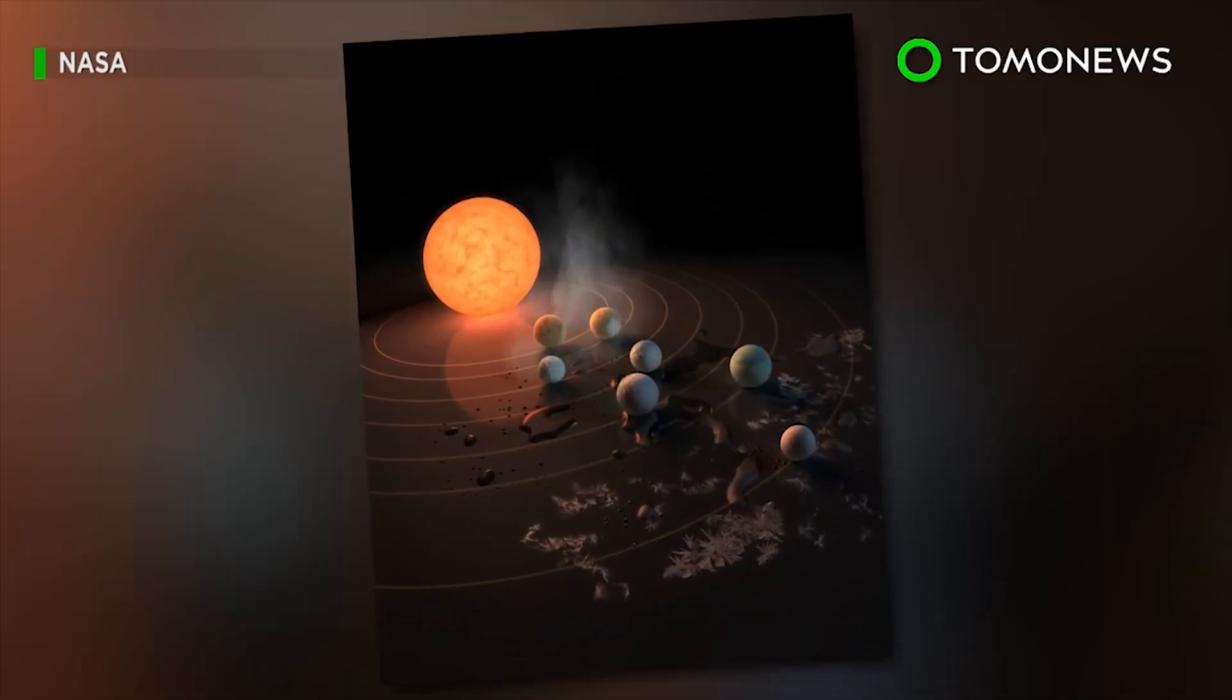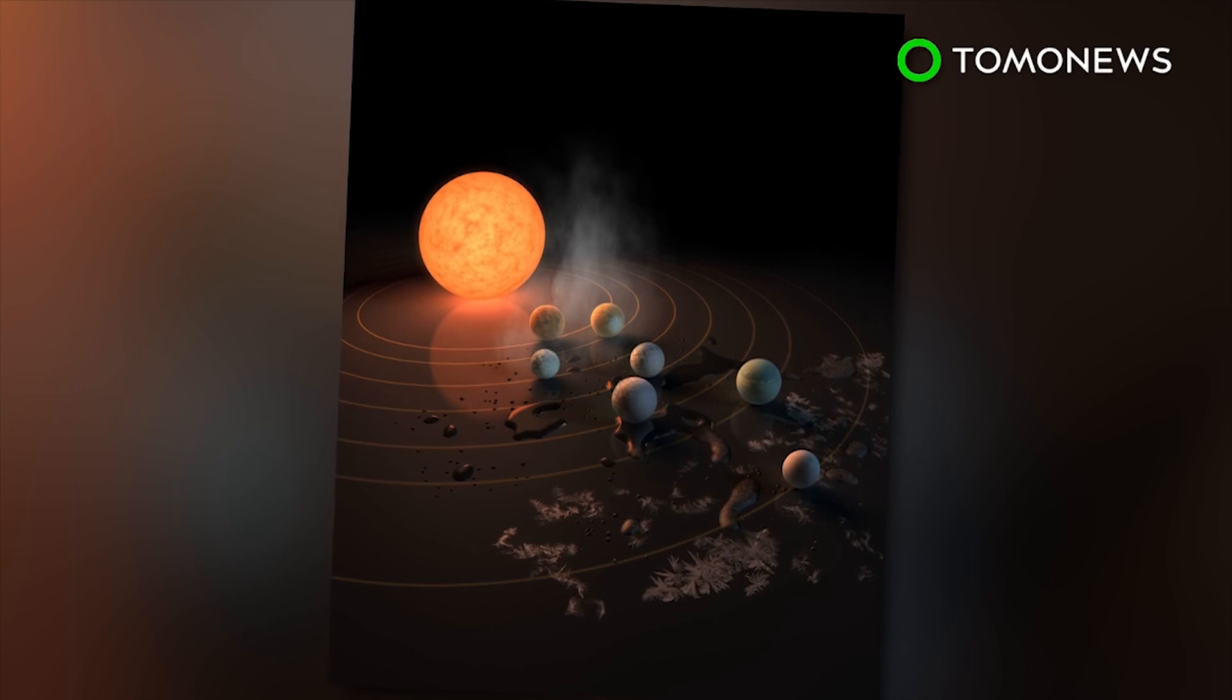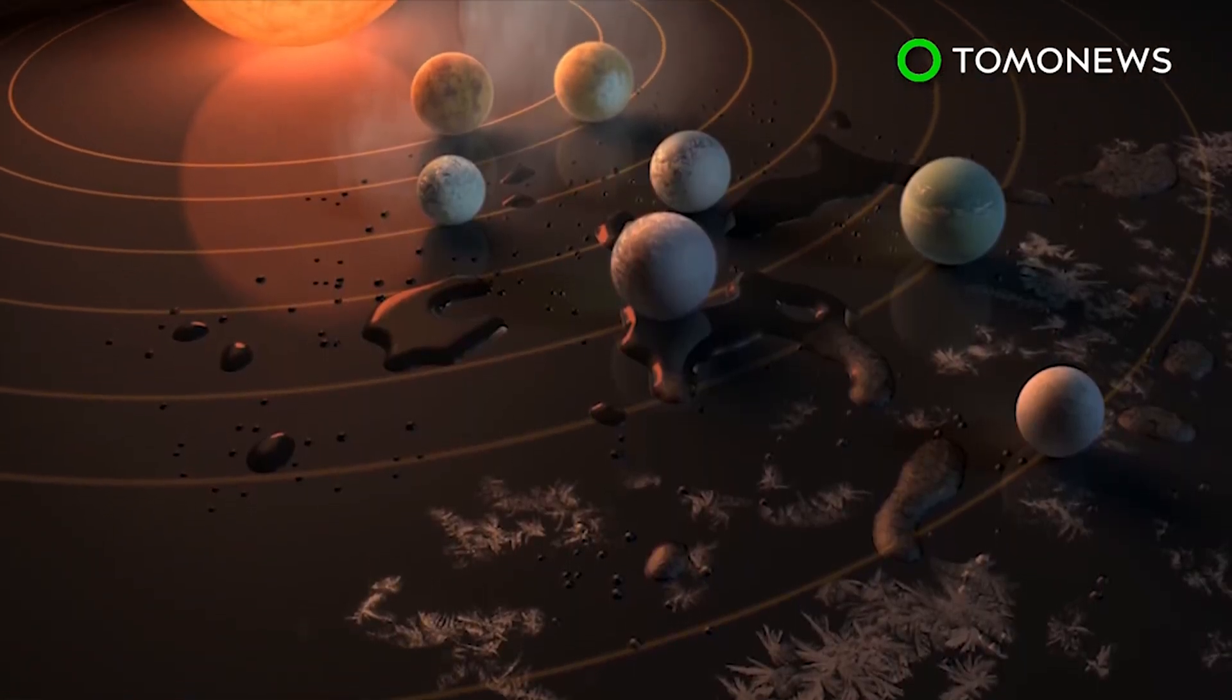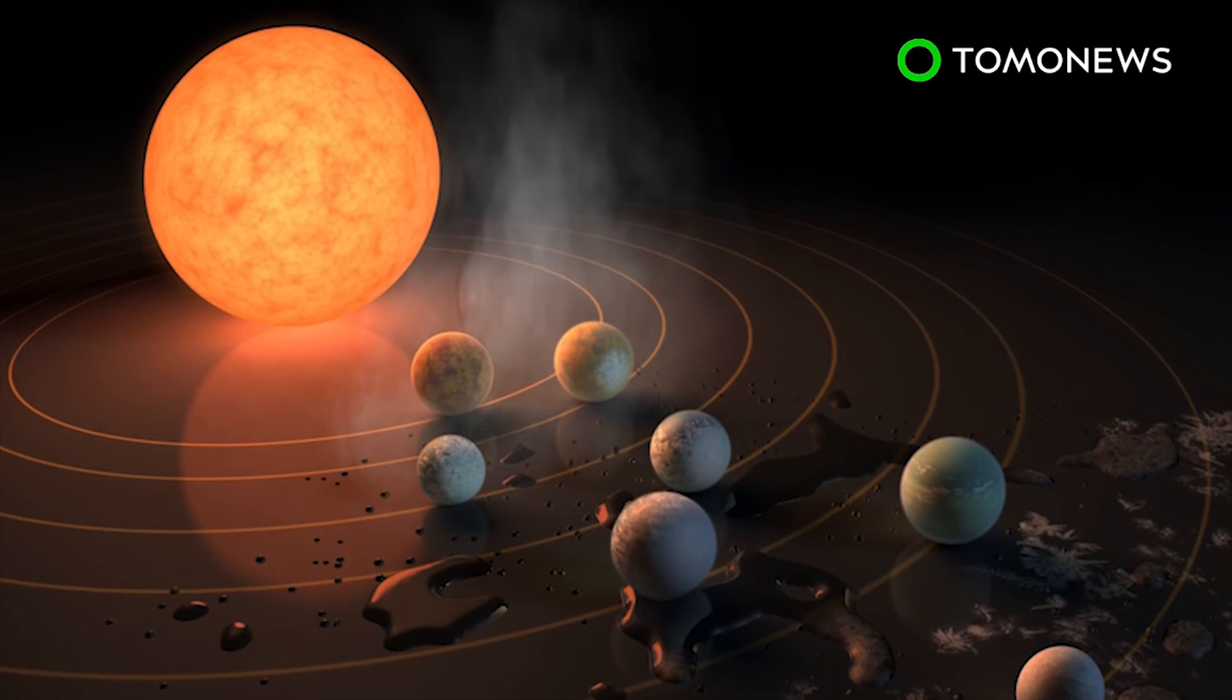NASA this week unveiled a major discovery of a star system that contains seven planets similar to Earth. What's exciting is that three of them might just be habitable enough to support extraterrestrial life.